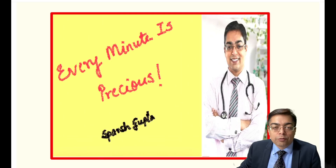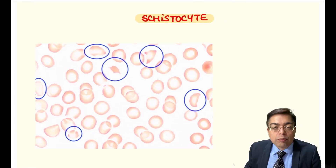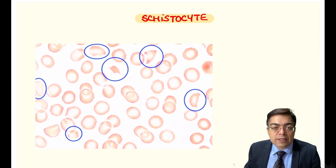Hi guys, welcome to the next episode of the 'Every Minute is Pressure' series. Today we're going to be having a look at a very important example of an image which is put up to us in exams, and this is of a cell which is given the name of schistocyte.